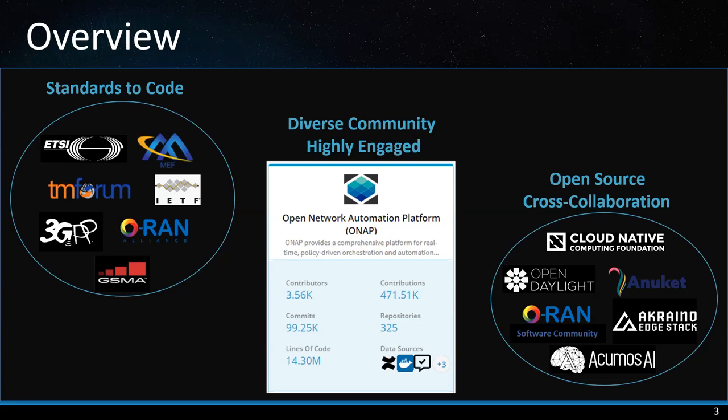ONAP resides in an ecosystem with standard design organizations where cross-influence occurs for the benefit of the industry. The ONAP release supports ETSI NFV SOL 1, 2, 3, 4, 5, and 7 standards. As part of an effort to better integrate and align ONAP, 3GPP, and ORAN, ONAP sought to integrate the ONAP VES specification — Virtual Event Stream specification — as part of the 3GPP specification, to drive standard-based alignment for fault management and performance management telemetry collection.